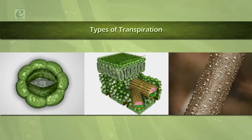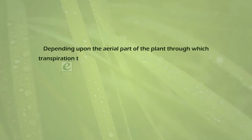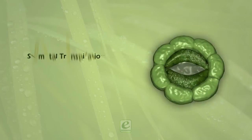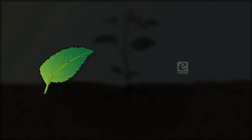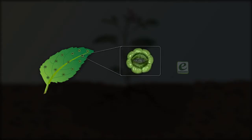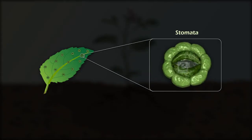Depending upon the aerial part of the plant through which transpiration takes place, it can be categorized into three types. The first is stomatal transpiration — the loss of water vapors through microscopic pores called stomata, surrounded by specialized guard cells.